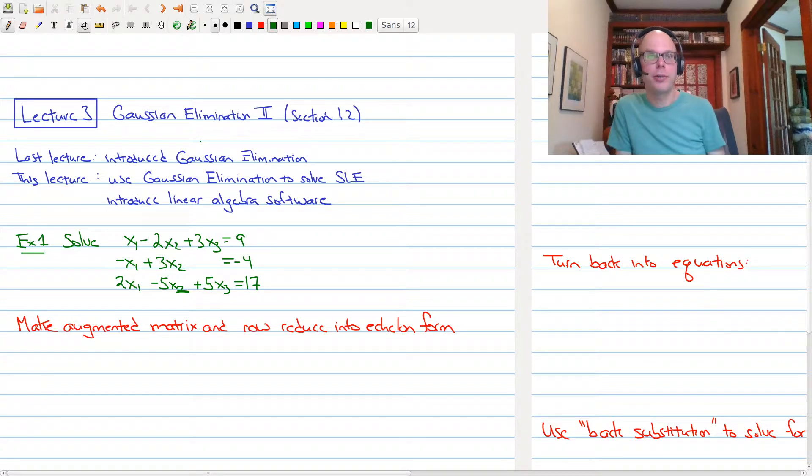Hi, welcome back to lecture three of Math 1B03. In today's lecture we're going to be looking at Gaussian elimination. This is a continuation of section 1.2. In our last lecture we introduced Gaussian elimination, which is this procedure by which we take a matrix, use elementary row operations, and put it into either echelon form or reduced row echelon form, depending upon what our problem will require.